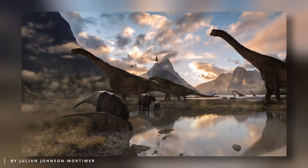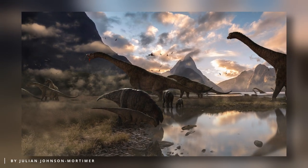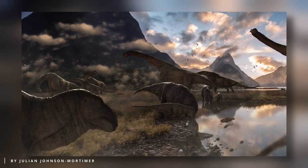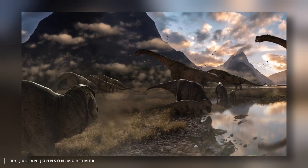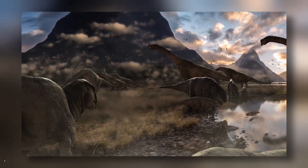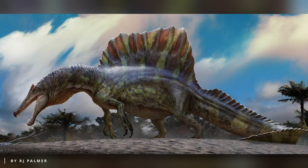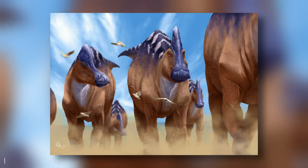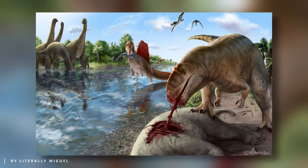Over millions of years, dinosaurs occupied numerous niches in prehistoric ecosystems. These animals diversified into a vast array of shapes, sizes, and appearances, ultimately establishing themselves as the dominant group during the Mesozoic era.